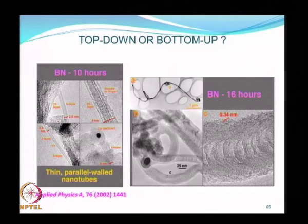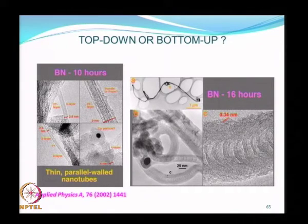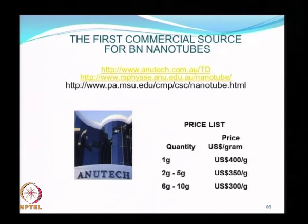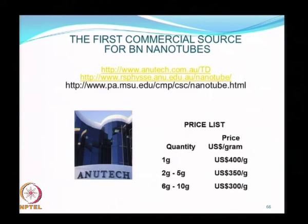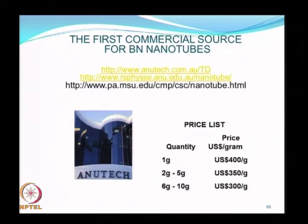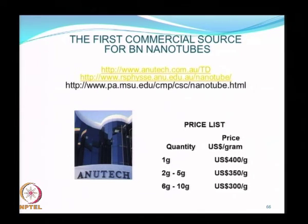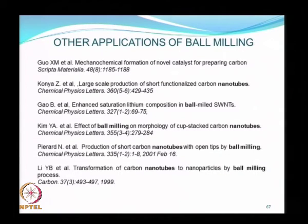Boron nitride nanotubes can be produced using the combined mechanothermal process, and you can see the structure of the nano material that results after 10 hours and after 16 hours. High energy ball milling combined with thermal annealing was in fact the first commercial process used for the production of boron nitride nanotubes, and cost-wise it is very competitive with bottom-up approaches — the same materials made using a bottom-up process would cost at least 3 to 4 times as much. There is a large variety of materials made using ball milling, particularly for making nanotubes.